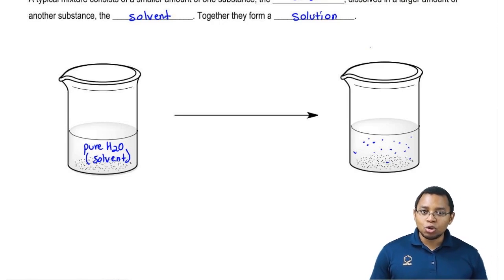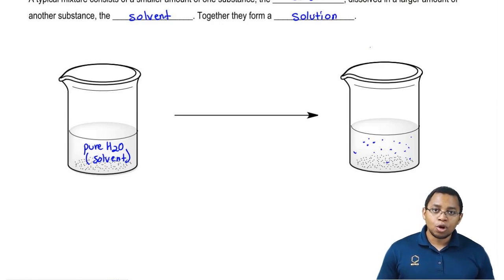They're the solute because they're so much smaller than the total volume of the liquid. The little bits of sugar or salt that you pour in there are your solute. The water is the solvent and it dissolves it. Together, they form a solution.